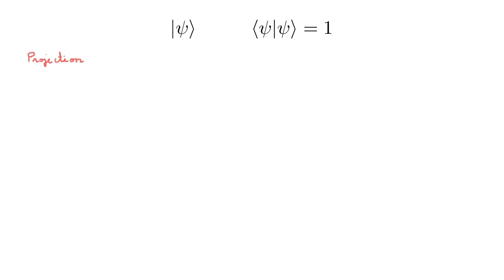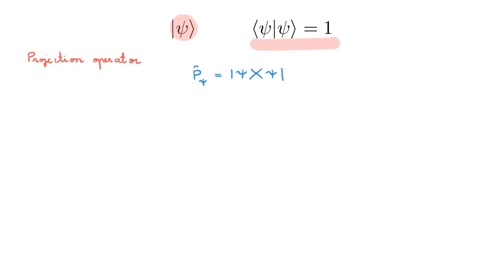To define the projection operator, we start with a ket |Psi⟩ that we take to be normalized. The projection operator associated with this ket, which we write P_psi, is defined as the outer product of |Psi⟩ with itself. And before we proceed, check out the video on operators if you need a refresher about outer products.